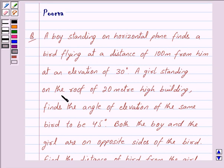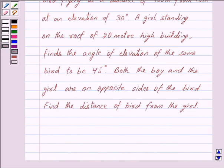A girl standing on the roof of a 20 meter high building finds the angle of elevation of the same bird to be 45 degrees. Both the boy and the girl are on opposite sides of the bird. Find the distance of bird from the girl.